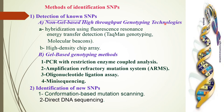In the case of gel-based genotyping methods, SNPs can be identified by four types: PCR with restriction enzyme coupled analysis, amplification refractory mutation system, oligonucleotide ligation assay, and mini-sequencing. For the identification of new SNPs, it can be done by two methods: conformation-based mutation scanning and direct DNA sequencing.